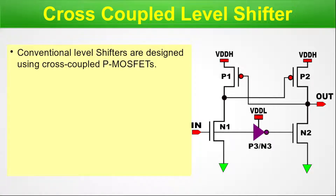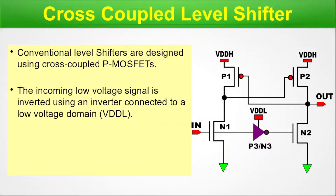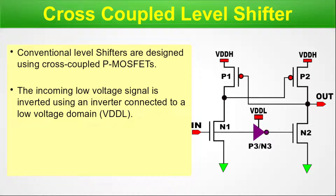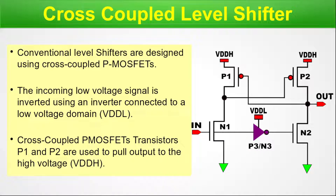The circuit diagram is very easy to understand. There are two sets of P MOSFETs — one on the right-hand side column and one on the left-hand side column. The incoming low voltage signal is inverted using an inverter connected to the low voltage domain, that is VDDL. Cross-coupled P MOSFET transistors P1 and P2 are used to pull up to the high voltage, that is VDDH. In this diagram, VDDH and VDDL are clearly marked.